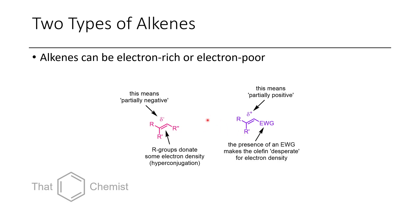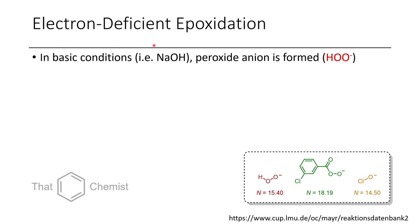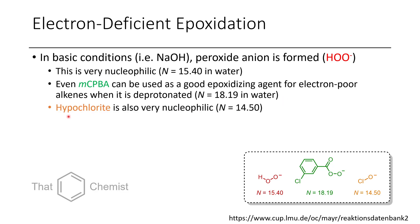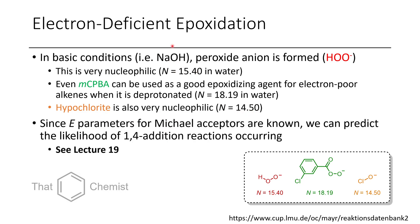Under these two different sets of conditions, we would use different reagents. Let's imagine we have an electron-deficient alkene and we want to epoxidize it. Under basic conditions, hydrogen peroxide is easily deprotonated to form the peroxide anion, which has an N of 15.4 — quite nucleophilic. If you use MCPBA, it's also possible to use this as a nucleophilic peroxide source, though we typically don't use it for 1,4-additions because it can also do reactions such as Baeyer-Villiger oxidation. Bleach (hypochlorite) is also quite nucleophilic with an N of 14.5, making all of these possible options for oxidation of electron-poor olefins.